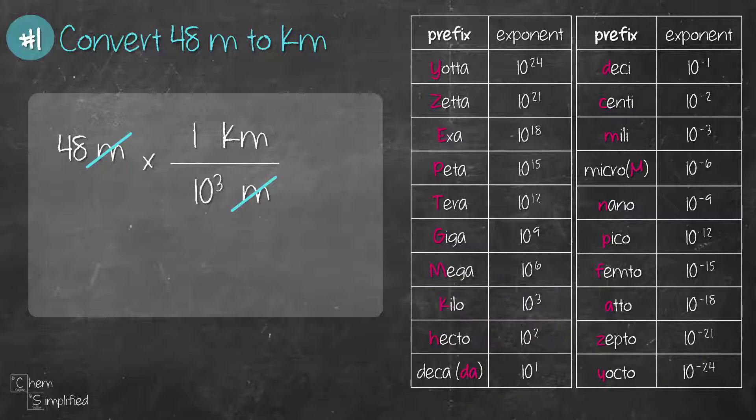We solve the math. 48 divided by 10 to the power of 3 equals 4.8 times 10 to the negative 2 kilometers.